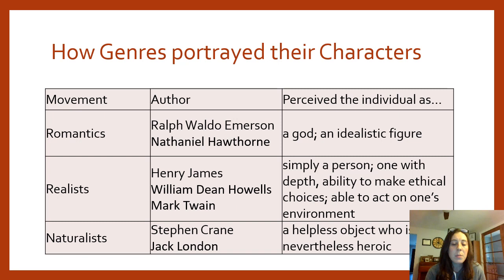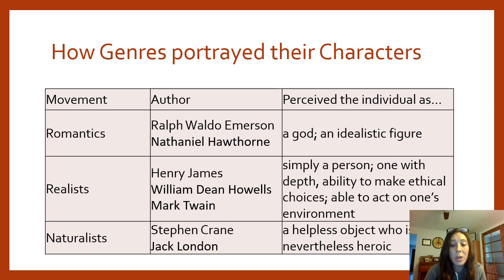To wrap up: the Romantics saw the individual as idealistic, with the potential for being godlike. Realist authors see the individual simply as a person — someone who can make choices and act on their environment. The Naturalist sees the individual as just an object thrown around by fate and nature, though there's some heroism in striving against your fate even when it's hopeless. That's our overview of realism, regionalism, and naturalism.